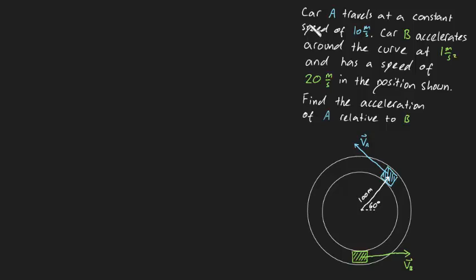G'day guys. Car A travels at a constant speed of 10 meters per second. Car B accelerates around the curve at 1 meter per second squared and has a speed of 20 meters per second in the position shown. Find the acceleration of A relative to B.